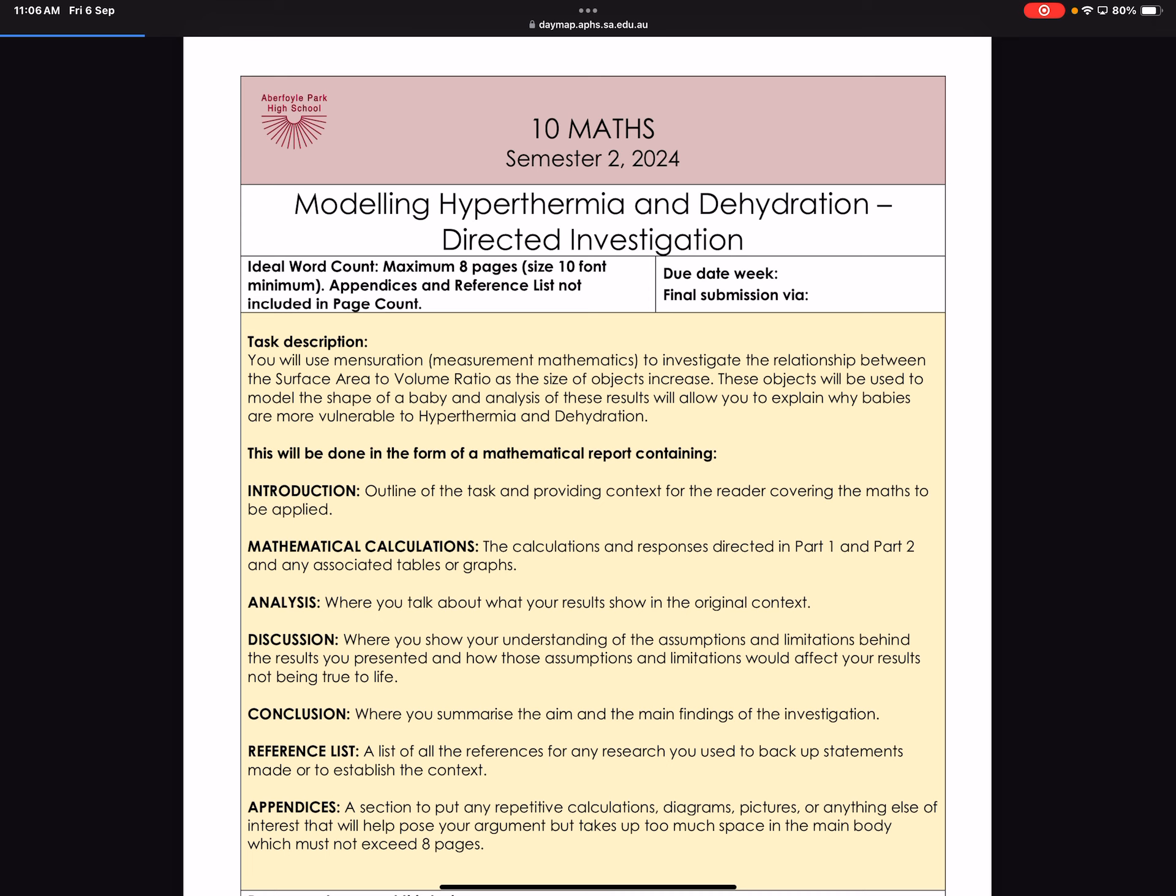These objects will be used to model the shape of a baby, and analyzing the results that you get will try to explain why babies are more vulnerable to hyperthermia. Does anyone know what hypothermia is? It's when you're super cold. Hypo is lack of, lack of heat. Hyperthermia is too much heat. You'll notice, if you actually watch the news, babies always die every summer because people forget them. They go and play the pokies, and they leave them in the car, and they die.